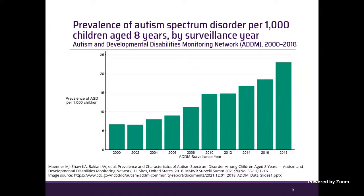This slide shows the prevalence of autism spectrum disorder over time. As you can see, over the past two decades the diagnosis of autism has drastically increased. The current prevalence is approximately 10 percent higher than the estimate in 2014, and almost three times higher than the first estimate reported in 2000.